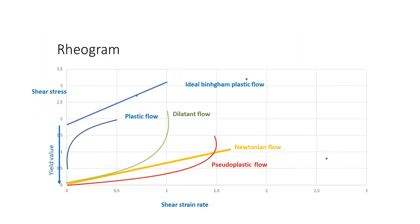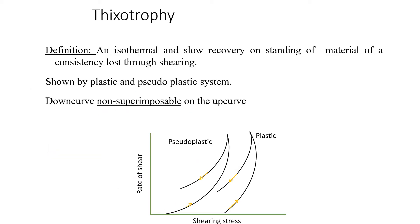In the rheogram for thixotropic flow, the curve is between shearing stress and rate of shear, as with other rheograms, but here you can easily see that the up curve and the down curve are not superimposable on each other. This particular behavior is known as thixotropy.